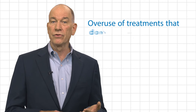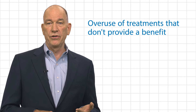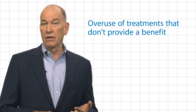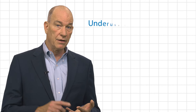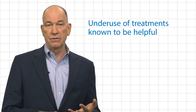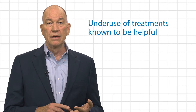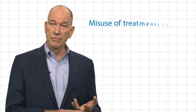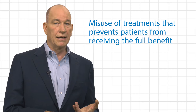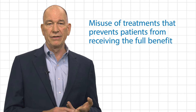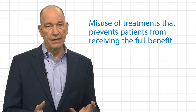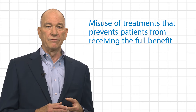They characterized U.S. healthcare as suffering from three main features: the overuse of treatments that are known not to provide patient benefit, the underuse of treatments known to be helpful to patients, and the misuse or misapplication of treatment that led to patients receiving less than the full potential benefit of treatment.